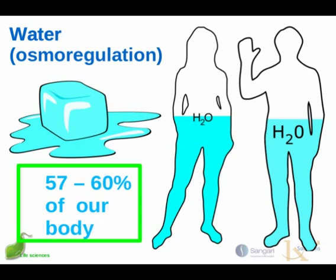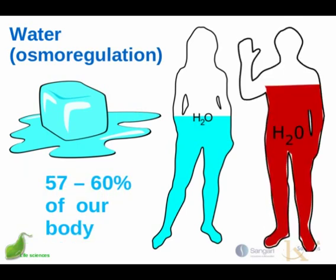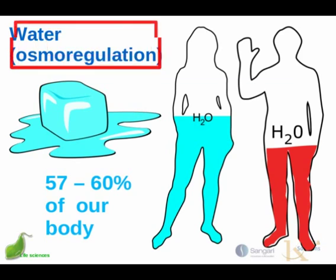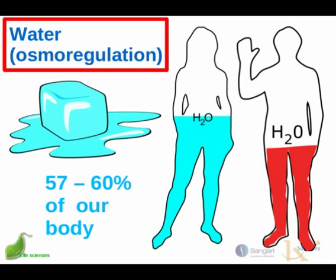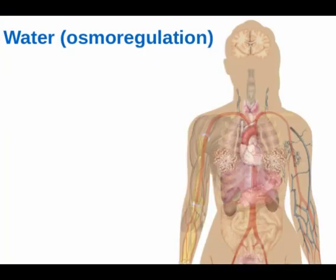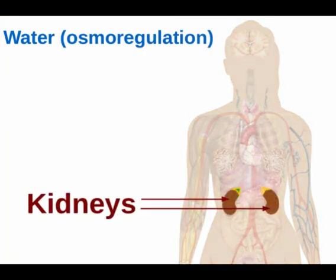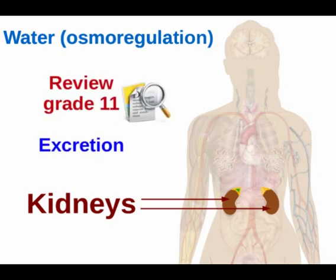If the water level is much higher or much lower in our bodies than this, then we have big trouble. So let's look at how this water balance is maintained. In order to do that, we need to review a little bit about the kidneys from what we learned in grade 11 under the topic of excretion.